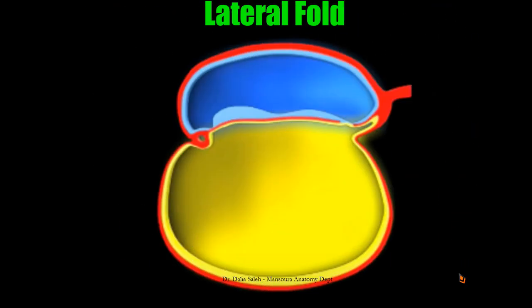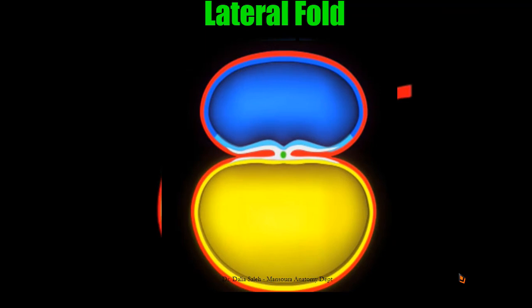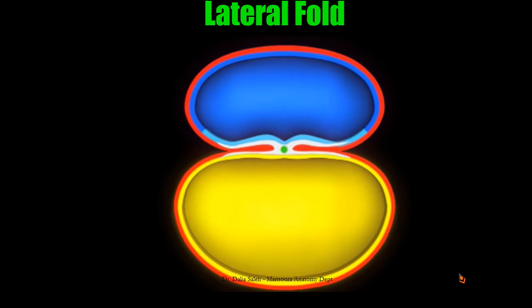The embryo folds in two directions: in a cephalocaudal direction and in a lateral direction. For lateral folds: this is the embryonic disc, with the amnion, yolk sac, connecting stalk, allantois, and the heart-forming region. If we take a cross-section, we can see the amnion and the yolk sac. In between them lies the trilaminar germ layer. In the middle we have the notochord; on each side we have the intraembryonic mesoderm. Above it lies the ectoderm that will differentiate into the neural tube, and below it lies the endoderm.